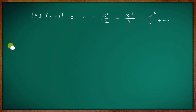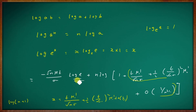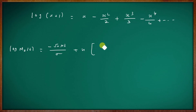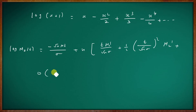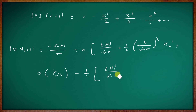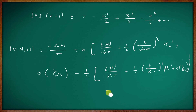Applying this, log Mz(t) equals −√n·νt/σ · log e plus n times [t·μ₁'/(√nσ) + (1/2)·(t/√nσ)²·μ₂' + O(1/n^(3/2))] minus (1/2)·[t·μ₁'/(√nσ) + (1/2)·(t/√nσ)²·μ₂' + O(1/n^(3/2))]² plus etc.